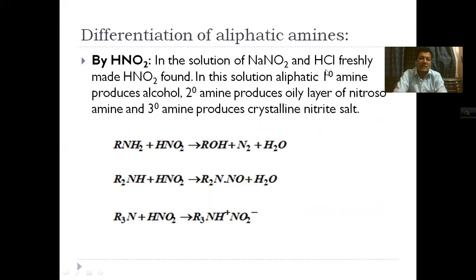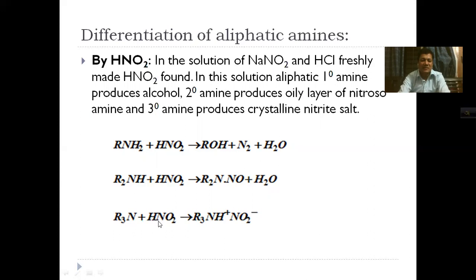When nitrous acid (freshly made from sodium nitrate and hydrochloric acid) is added to primary amine, it produces primary alcohol, with nitrogen gas and water as by-products — this proves the aliphatic primary amine. When nitrous acid is added to secondary amine, a nitrosoamine is produced — an oily yellow substance. When tertiary amine reacts with nitrous acid, trialkyl ammonium nitrite salt is produced as a crystalline product.